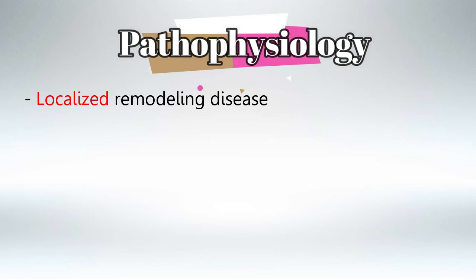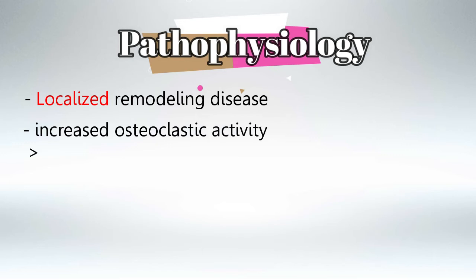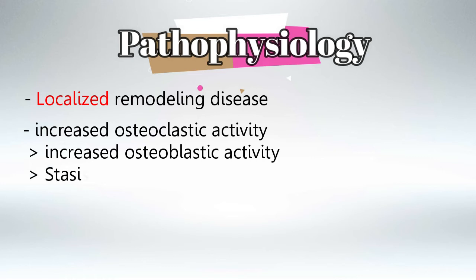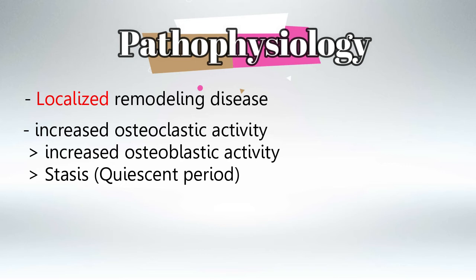In the affected bone there will be increased activity of osteoclasts locally, which will cause bone resorption, so the bone is going to be very weak. And then it is followed by increased activity of osteoblasts, which will form bone, but this bone is abnormal and weak and it's called woven bone — so it's still subject to fractures. This is then followed by a period of stasis where both osteoclasts and osteoblasts stop working.